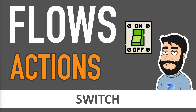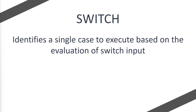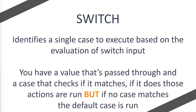Today we're going to be looking at Power Automate flow actions, specifically the Switch action. Microsoft states that it identifies a single case to execute based on the evaluation of the switch input. What this means is you have a value that's passed through and a case that checks to see if it matches. If the case does match, then actions are run. If no cases match, a default case runs a set of actions.